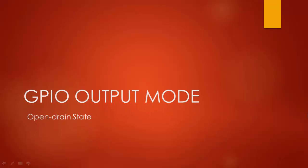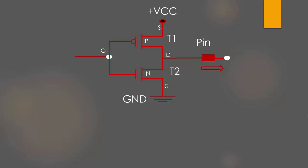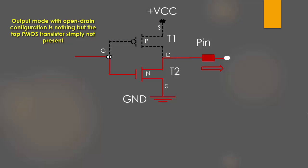Now let's understand the GPIO output mode with open drain output configuration. As you know, when the GPIO is in output mode it looks something like this. Open drain output configuration is nothing but the top PMOS transistor is deactivated; it is simply not present. So what you're left with is just a single NMOS transistor.